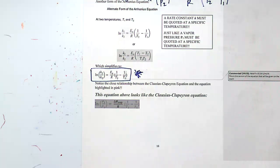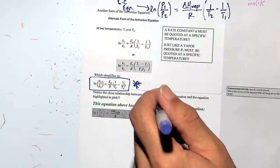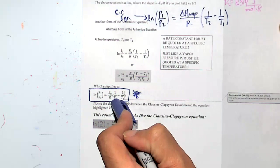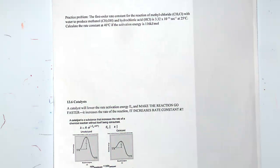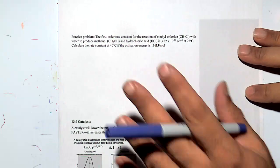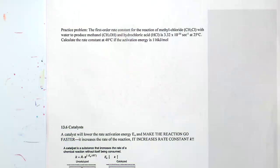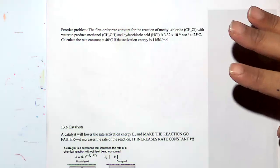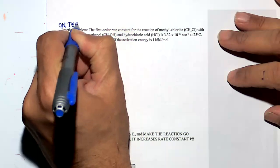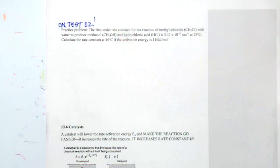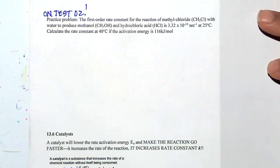Let's do a practice problem. This Friday you'll have a lab — it's a doozy, especially the post-lab with the Arrhenius equation and rate laws. It's intense but a good lab with real data — real chemistry is messy, as we saw Friday. Make sure you are working on your Quiz 2. Here's an application of the Arrhenius equation: the first-order rate constant for this reaction of methyl chloride with water to produce methanol and hydrochloric acid.